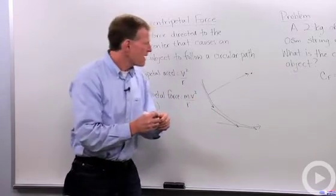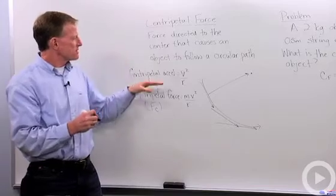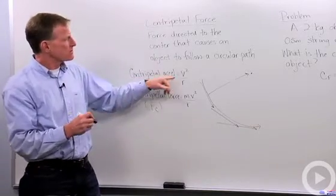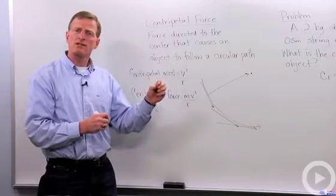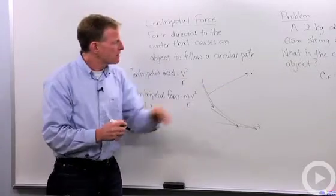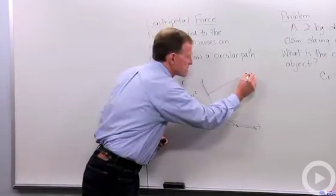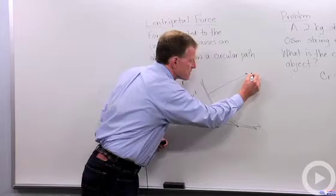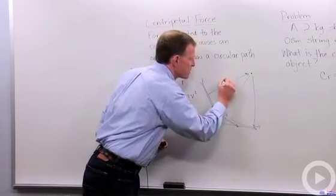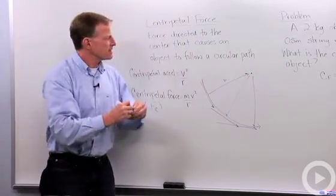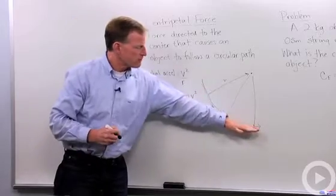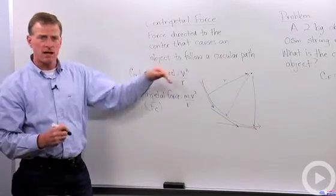And that force, the acceleration of that force we can describe as the velocity squared divided by the radius r. So the radius is going to be, again, this distance right here. So that's the acceleration due to a centripetal force, which allows that change in velocity.